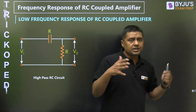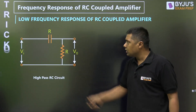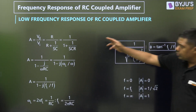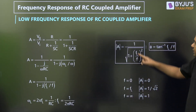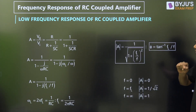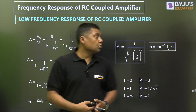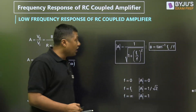At low frequency, the amplifier acts as a high-pass RC circuit. The gain formula for the high-pass filter is given by 1/√(1 + (F_L/F)²), where F_L is the 3 dB cut-off frequency and F is the instantaneous frequency. The phase shift φ is positive tan⁻¹(F_L/F).